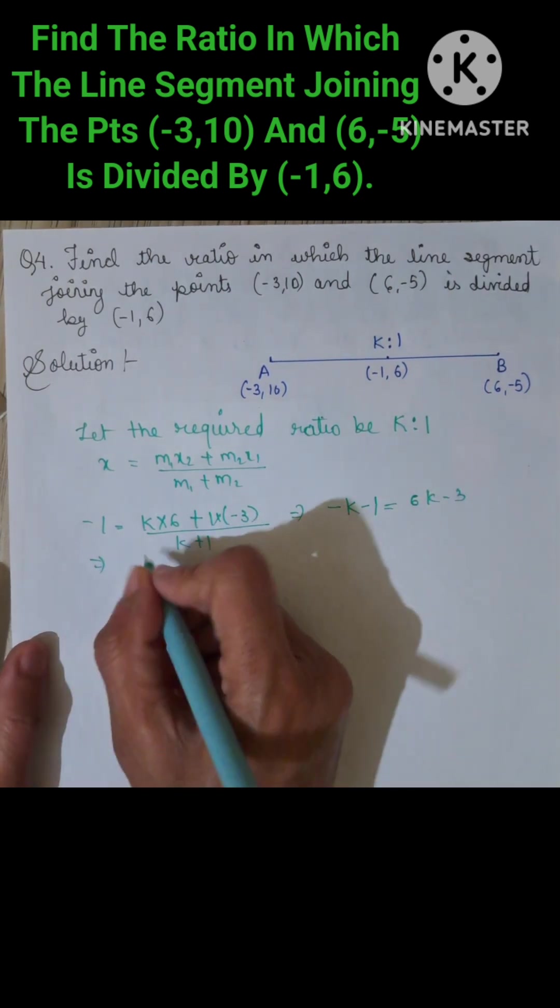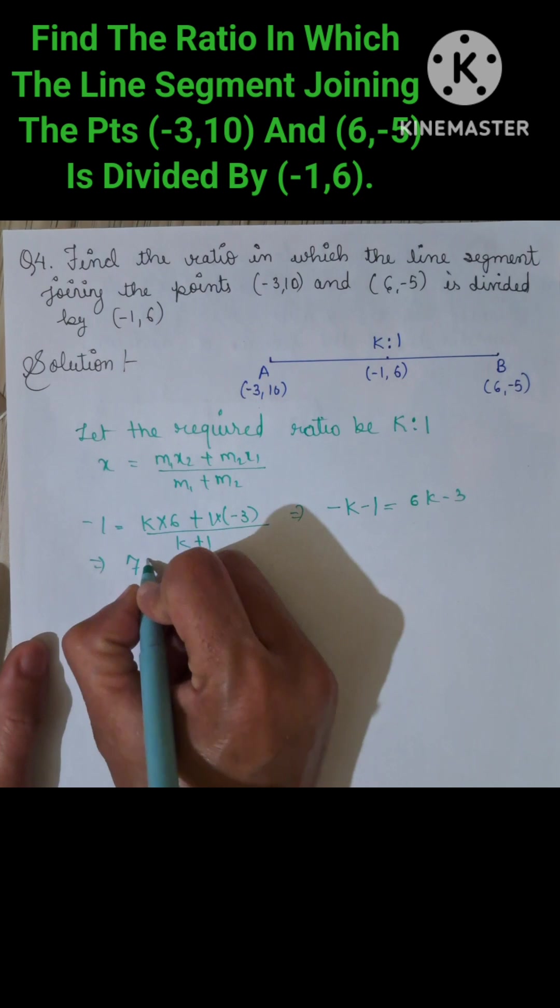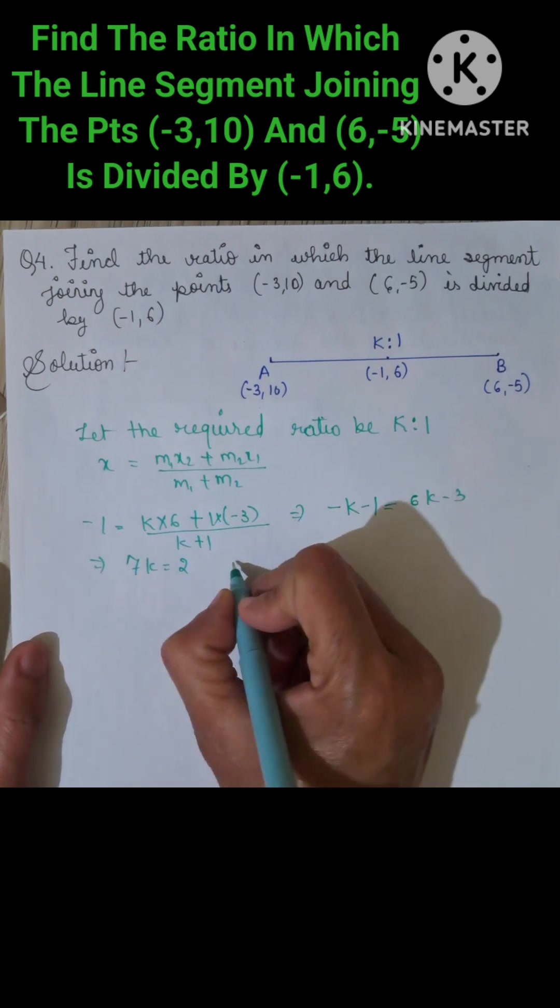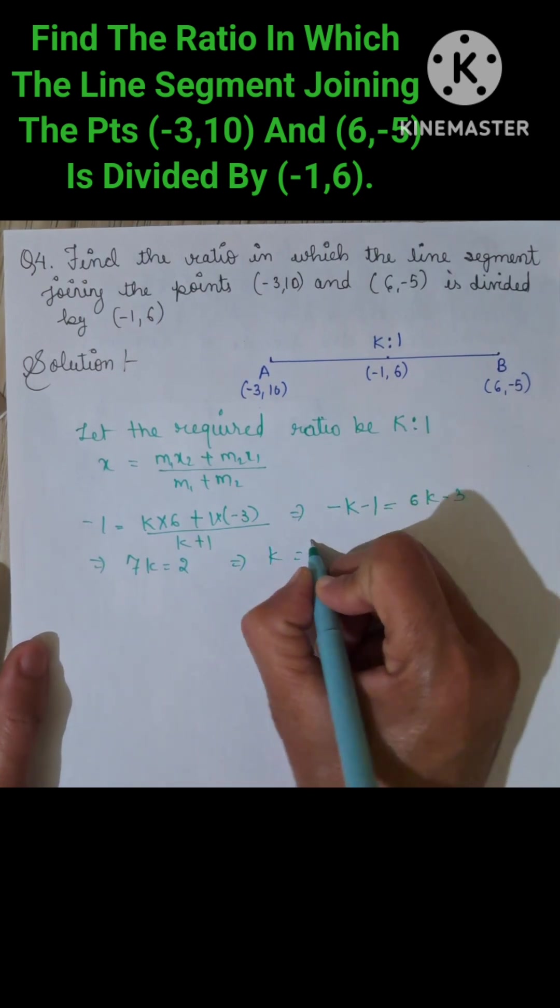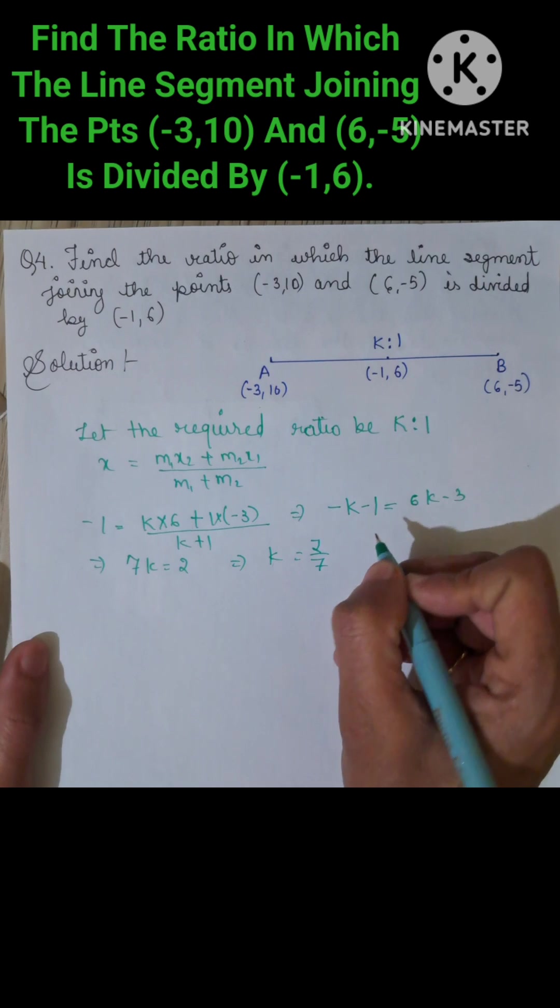Solving this equation, we get 7K equals 2, so K equals 2/7.